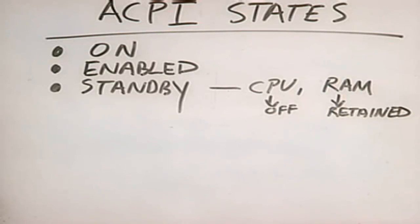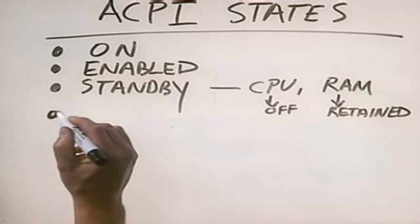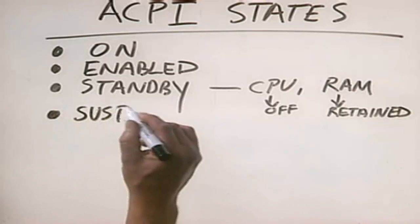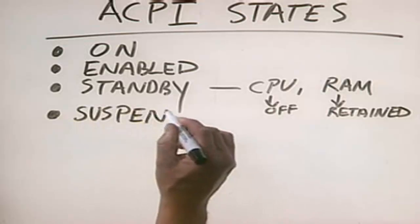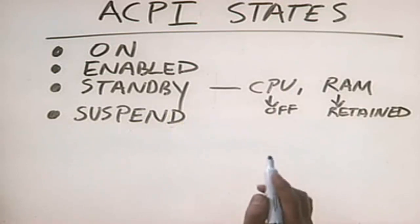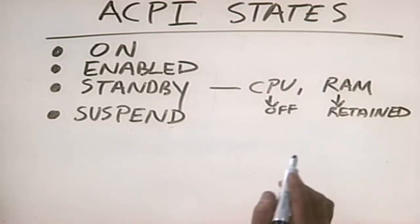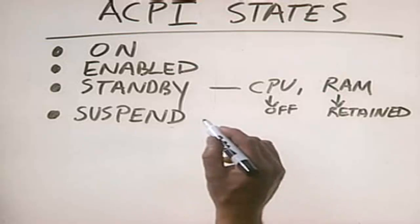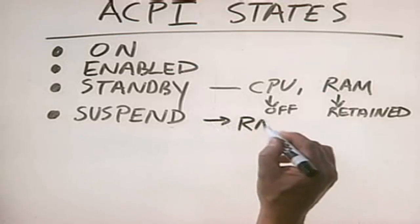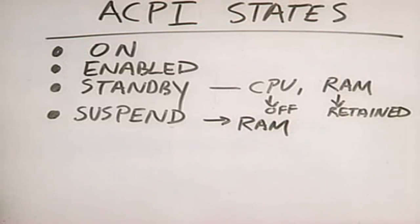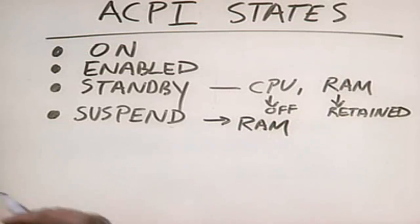ACPI also defines another state similar to standby called Suspend. In suspend mode, everything in the PC is shut down — hard disks, monitors, CPU — everything is shut down except for RAM. The only device on the motherboard that still has power is RAM, so its contents are retained. Everything else gets shut off.